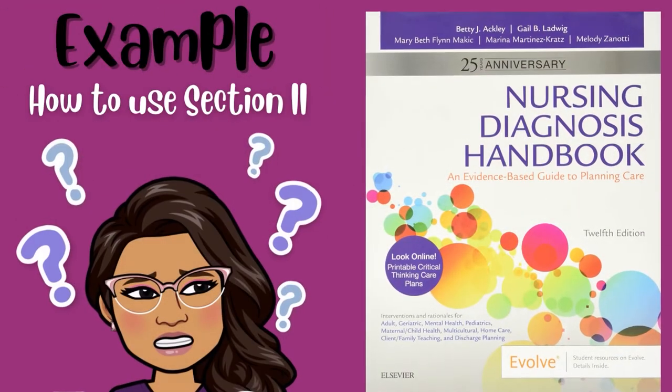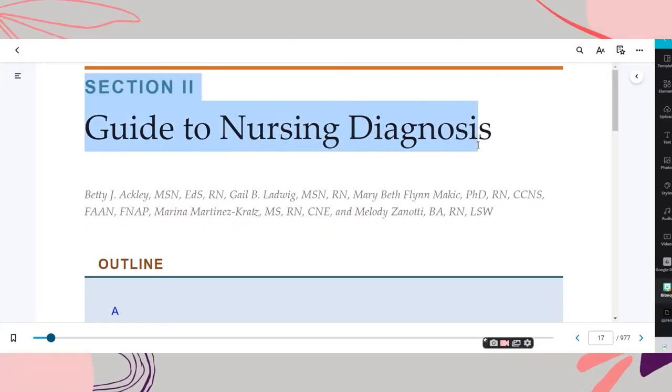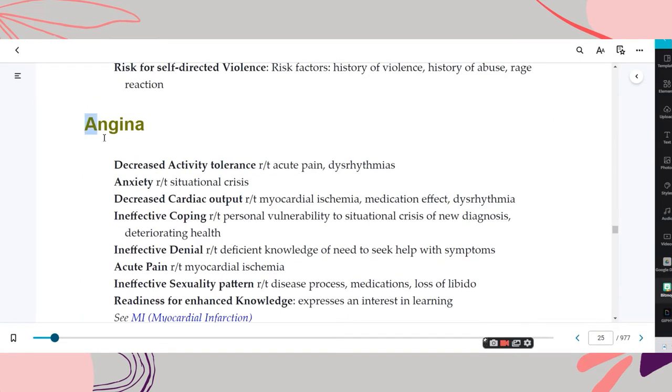Does this still sound confusing? Don't worry — let's go through an example together. Let's say you're taking care of a patient who has a medical diagnosis of angina. Let's look up the diagnosis of angina in your textbook in section two. If you look up angina in section two — I have it here in my textbook on page 25 — you'll see a list of possible nursing diagnoses that all relate to angina.